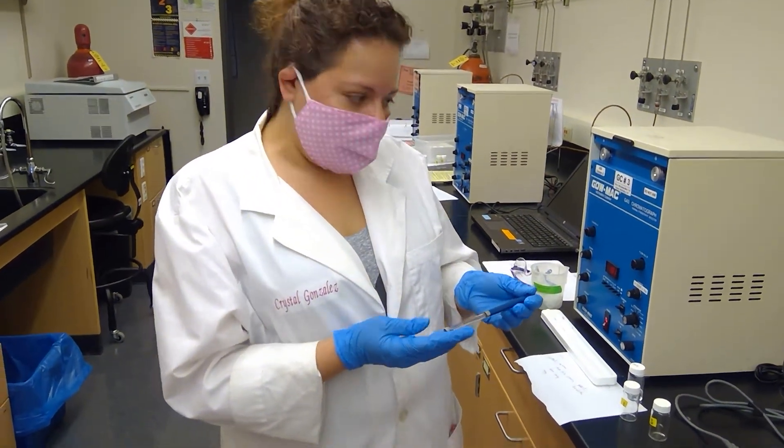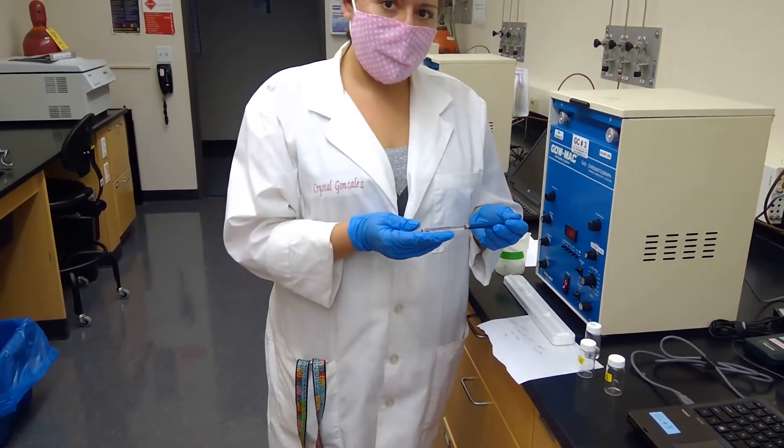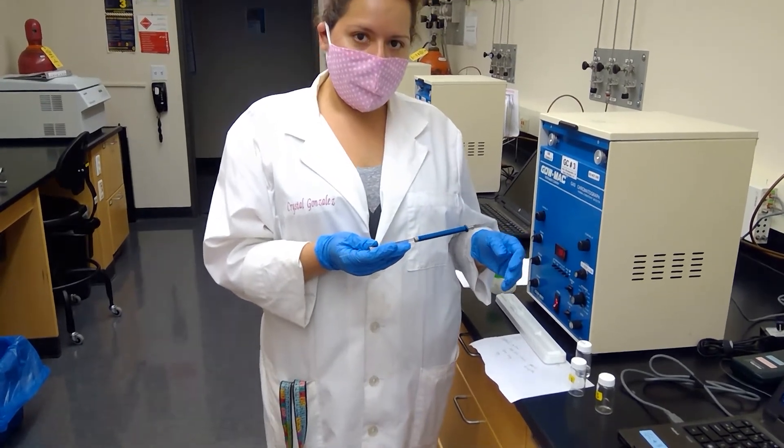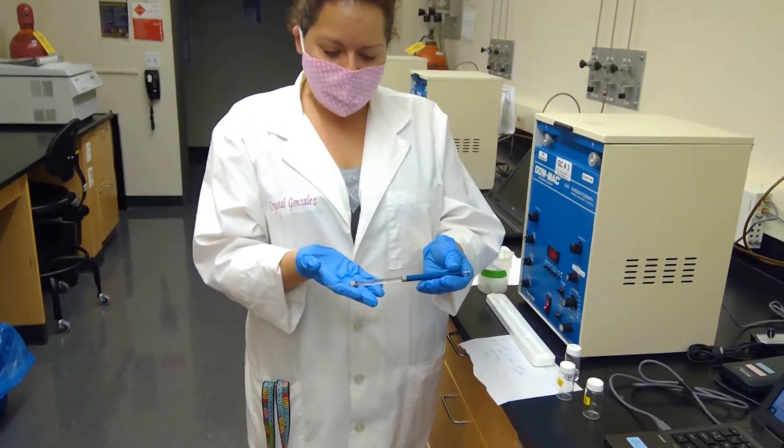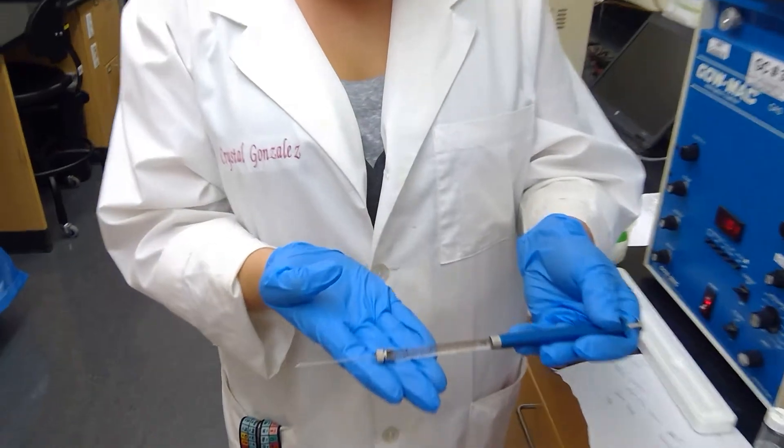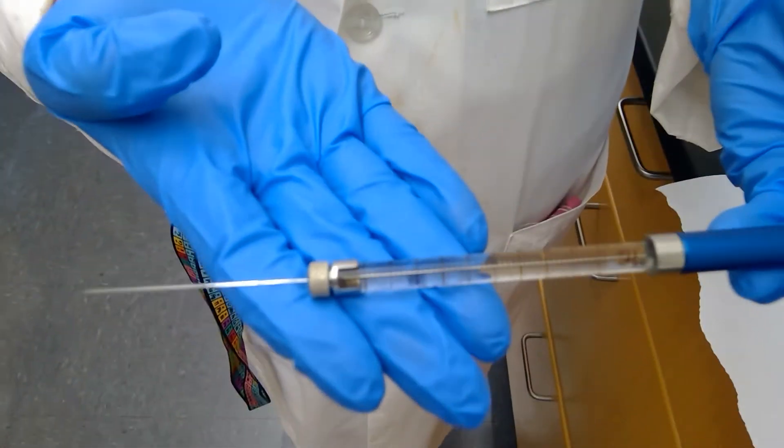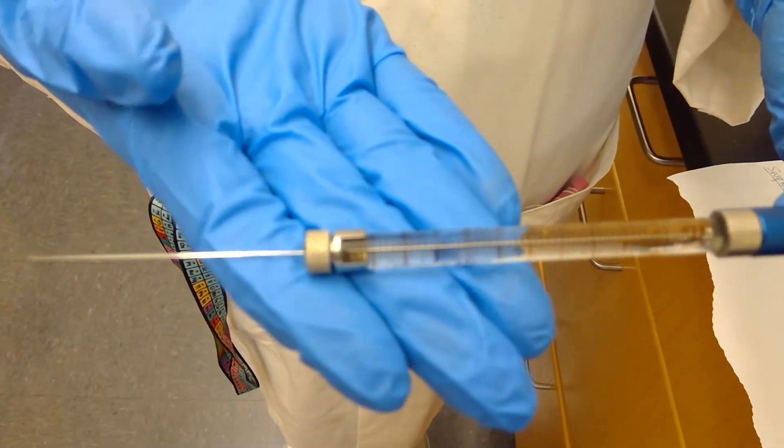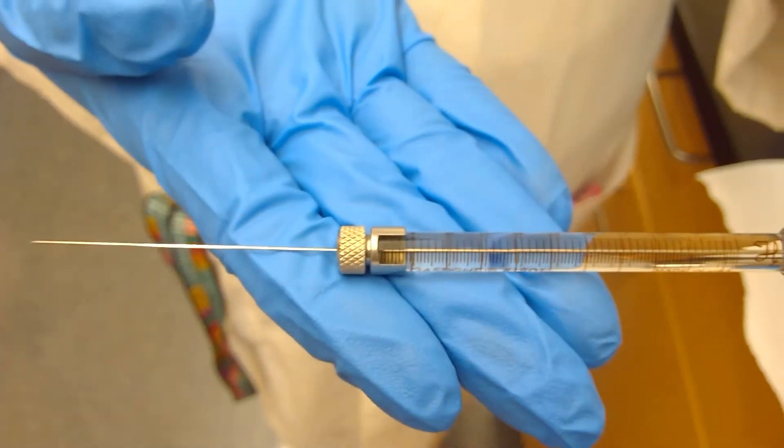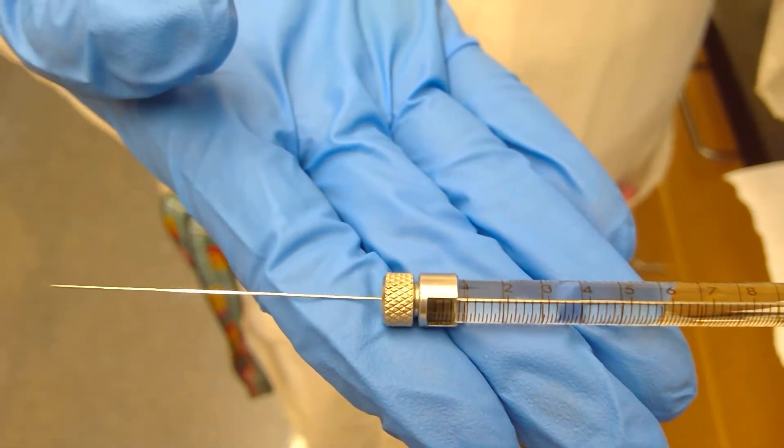All right, students, so we are going to do the gas chromatography for our sample from the caraway oil and in my hands here I have a Hamilton syringe, which is an old type of syringe. It's made out of stainless steel parts and glass. This particular one has a maximum volume of 10 microliters.